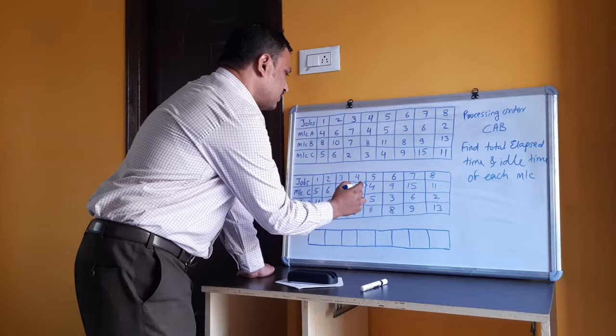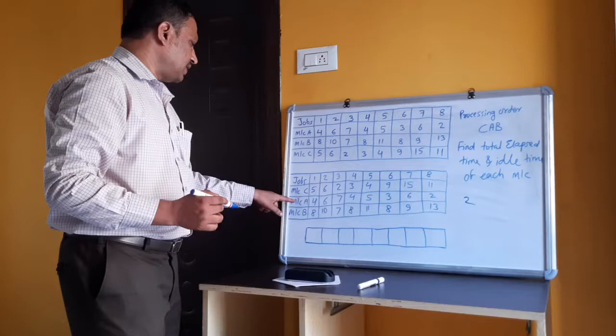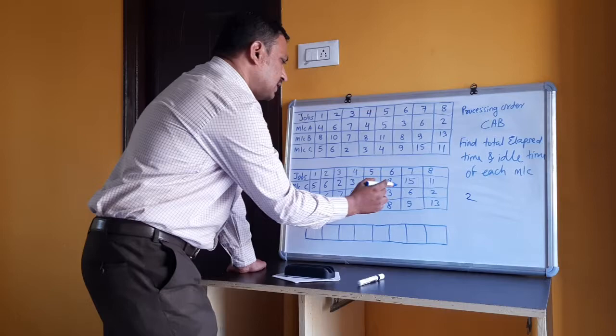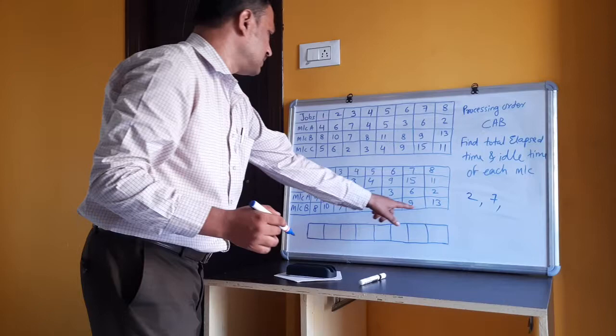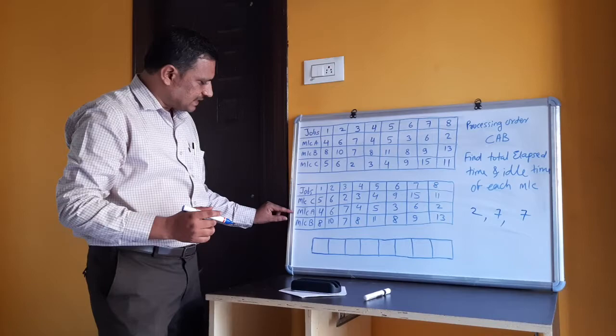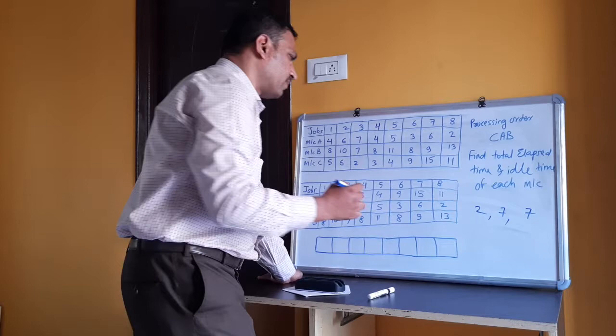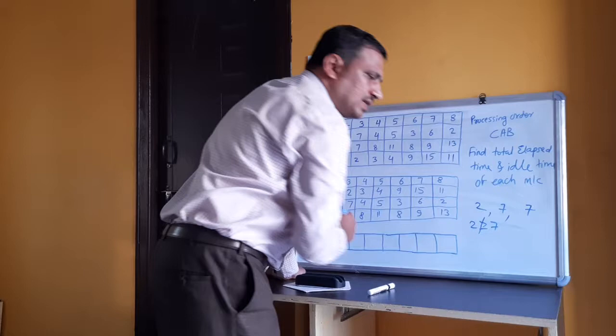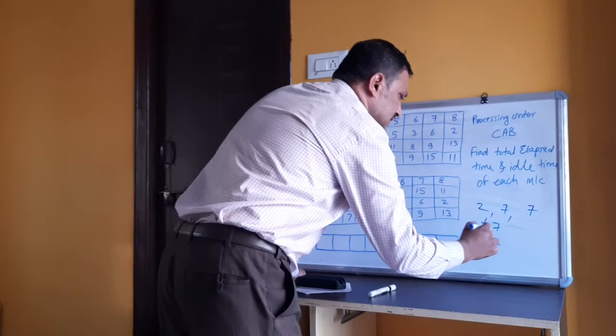The least processing time on machine C is 2. The highest processing time on machine A is 7. The least processing time on machine B is 7. We have to consider the first and second machine, and the second and third machine conditions. Checking: 2 is greater than or equal to 7 — no, this condition does not hold. But 7 is greater than or equal to 7 — yes, that condition holds good.